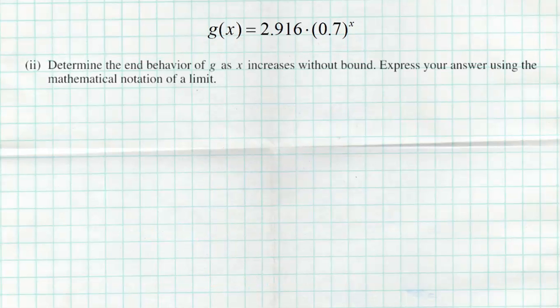For part two, we're asked to determine the end behavior of g as x increases without bound, and they want us to use limit notation. We want to find the limit of our function g of x as x goes towards infinity. A couple things we can do to get this answer. We can understand what's happening here. You guys should know that this is an exponential function. Based on my ratio, my b value being less than 1, we know this is going to be a decay function. We should all know that a decay function is going to look like this. So as we get further and further to the right, as x gets bigger and bigger, we're going to get closer and closer to 0.